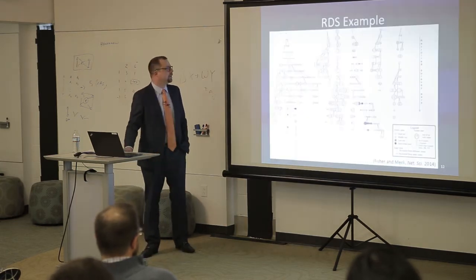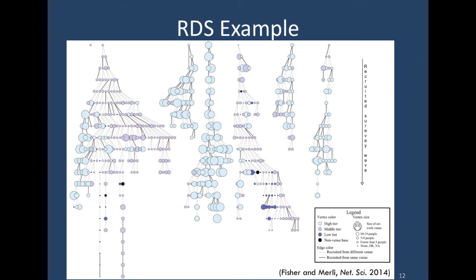I'm going to walk through an example of an RDS study. This is from data that Giovanna Murli collected and a visualization produced by Jacob Fisher. Typically you start with seeds — in this case they started with seven seeds at the top. They recruit the next wave of participants: one person didn't recruit anyone, but another recruited two people. Each wave of recruitment produces this growing tree structure through the network. You can see that some people sampled early end up not recruiting anyone, whereas other chains continue recruiting for a long period.